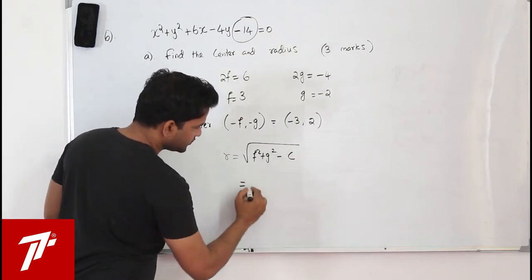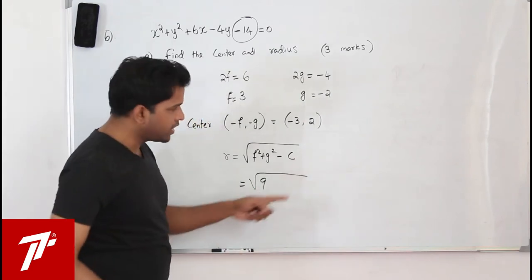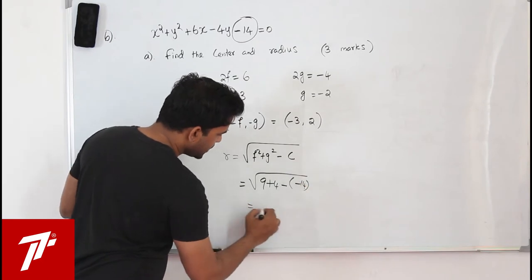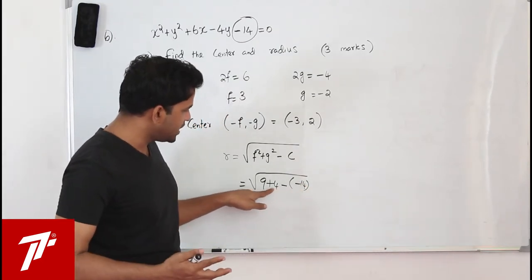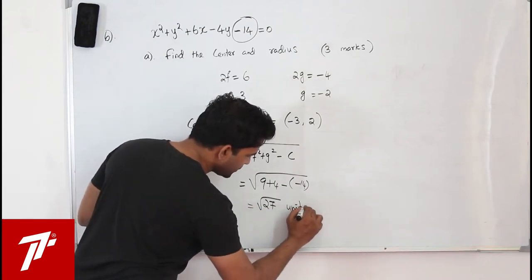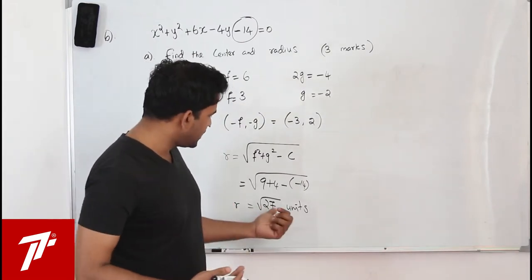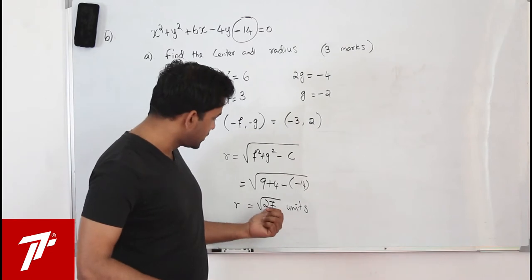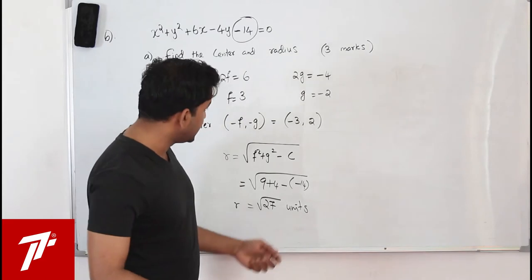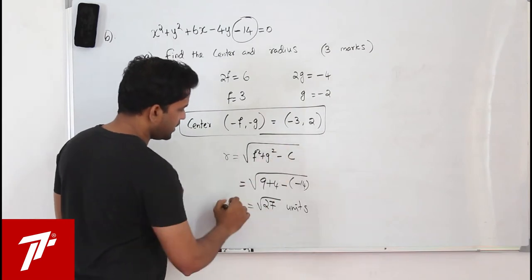Substituting, you get square root of (minus 3) squared plus (minus 2) squared minus (minus 14), which gives square root of 9 plus 4 plus 14, so square root of 27 units. That's your radius. You can also write it in decimal form.